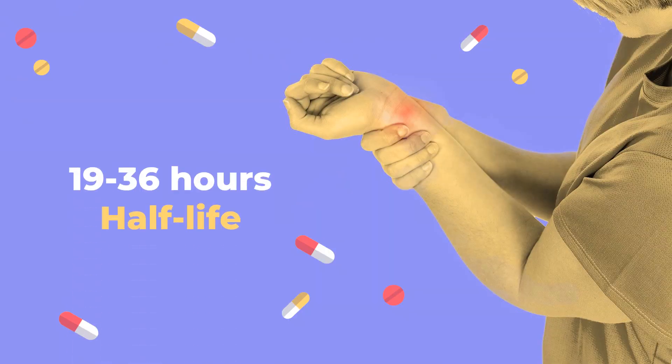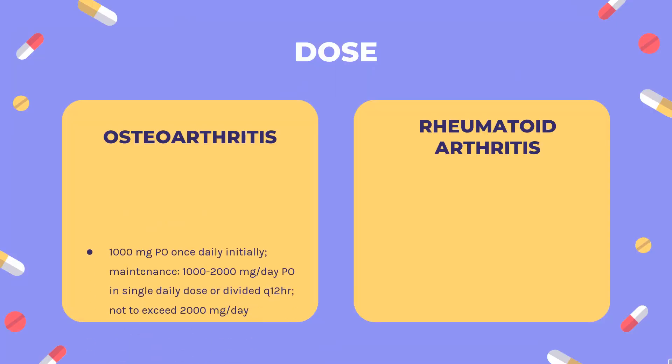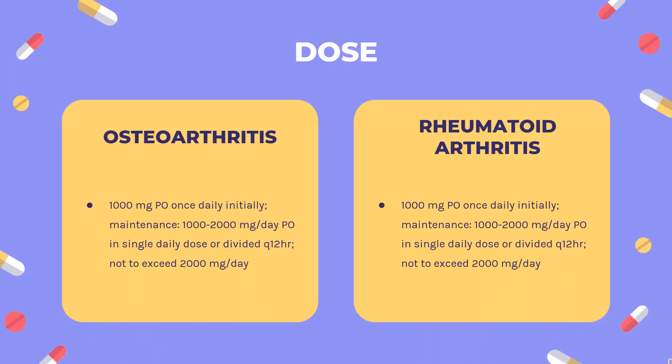Half-life: 6-MNA has a mean half-life of 24 hours, with a range of 19 to 36 hours. Dose — Osteoarthritis: 1,000 mg orally once daily initially; maintenance: 1,000 to 2,000 mg per day orally in a single daily dose or divided every 12 hours, not to exceed 2,000 mg per day. Rheumatoid arthritis dosing follows similar guidelines.